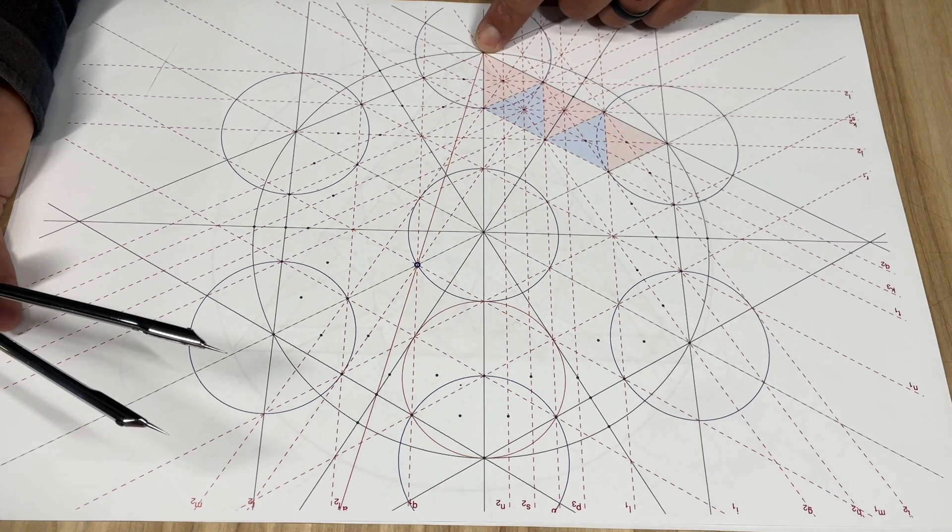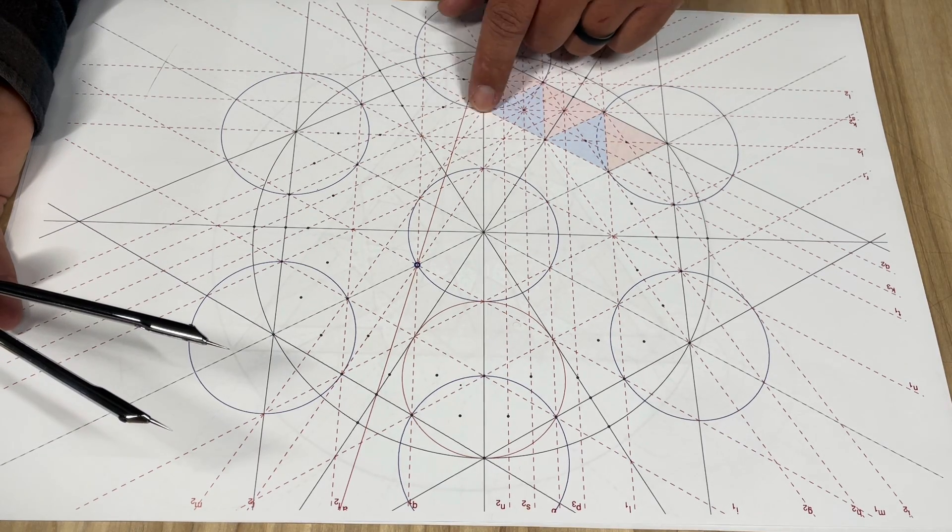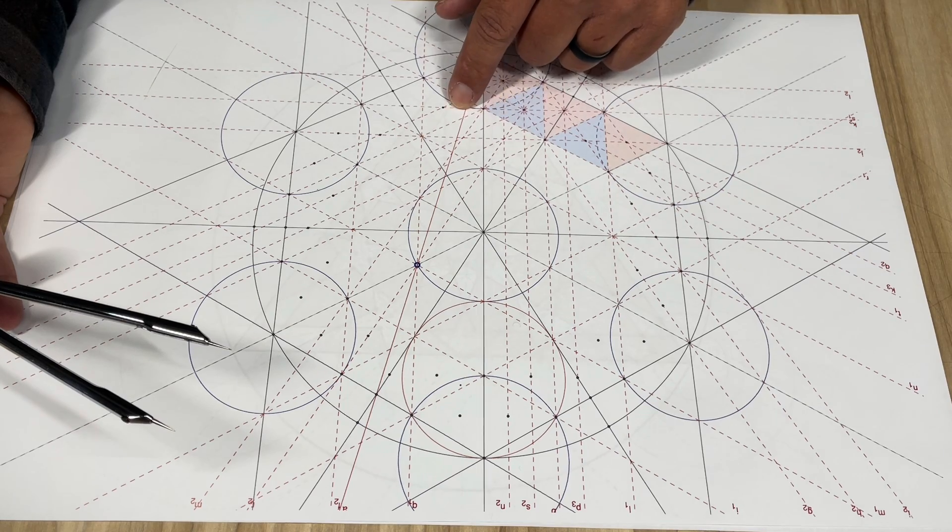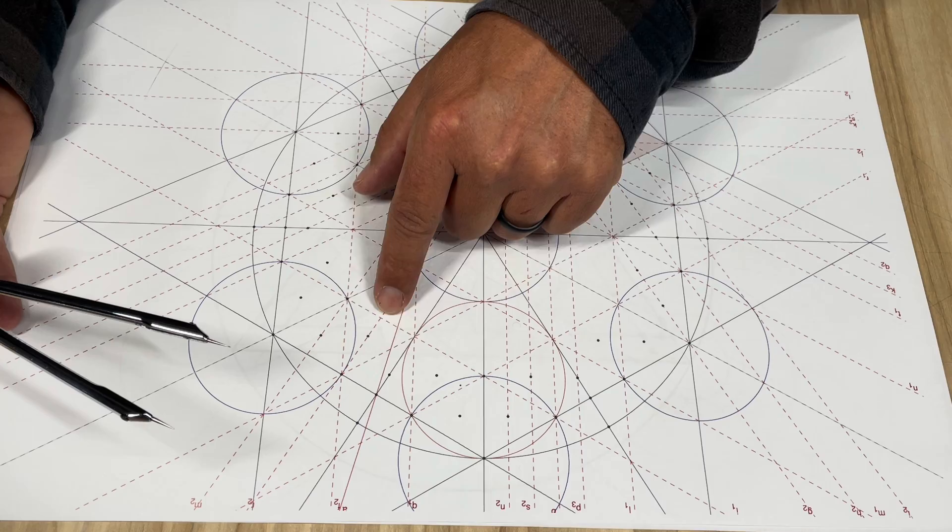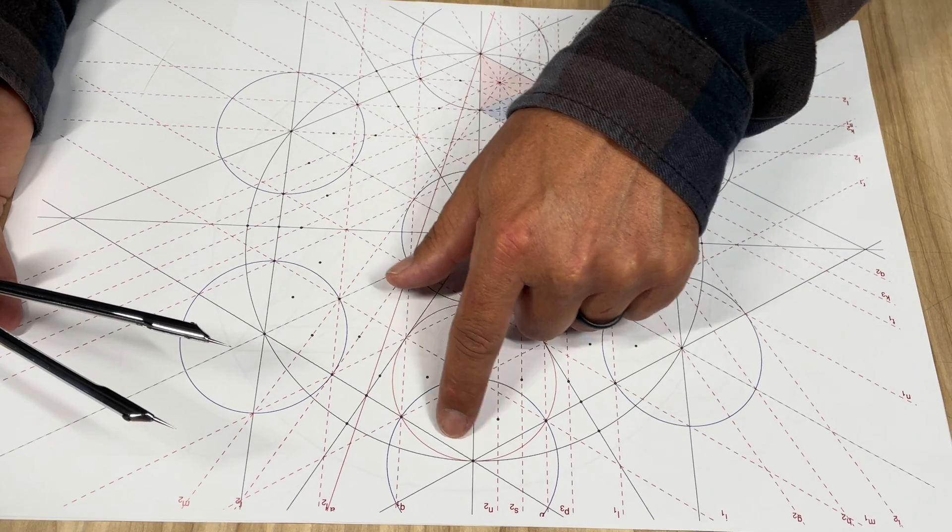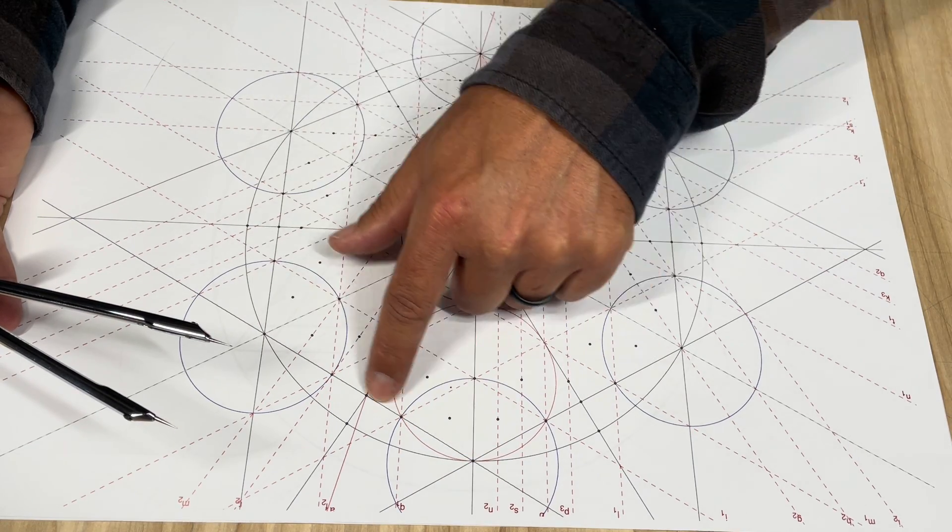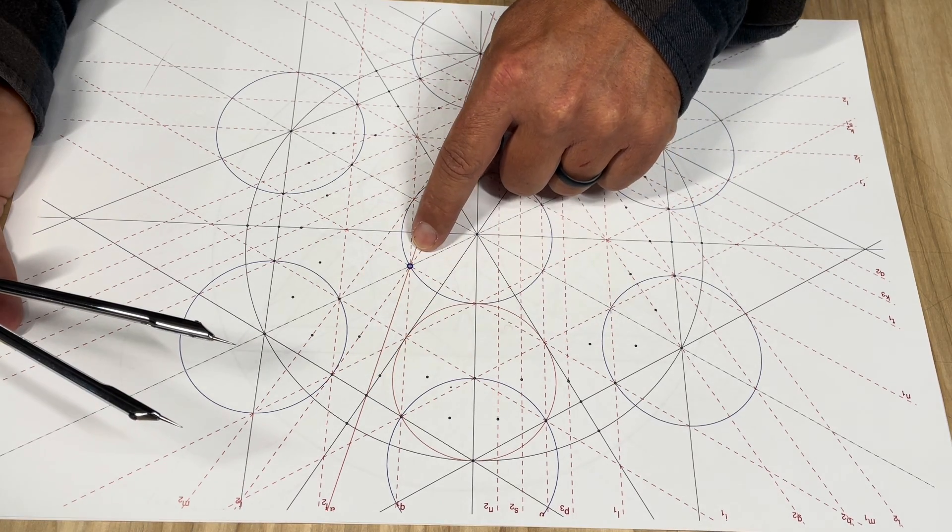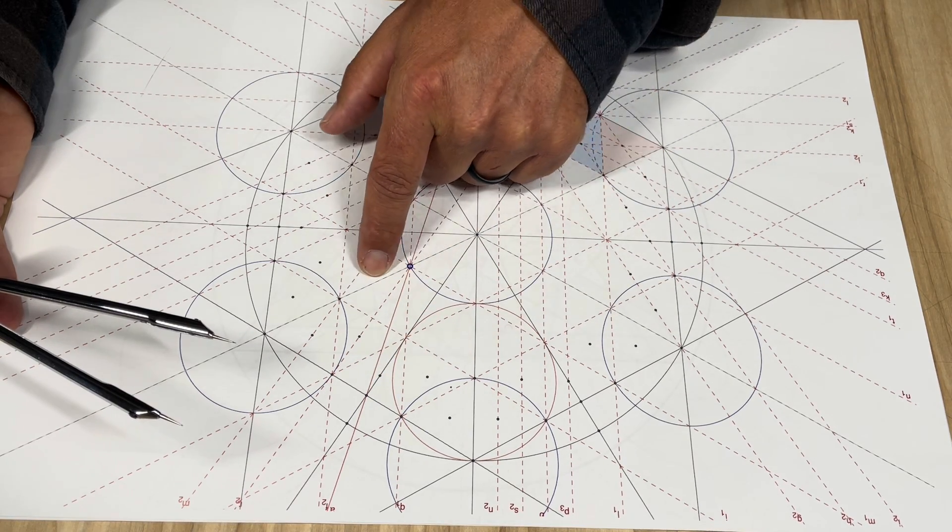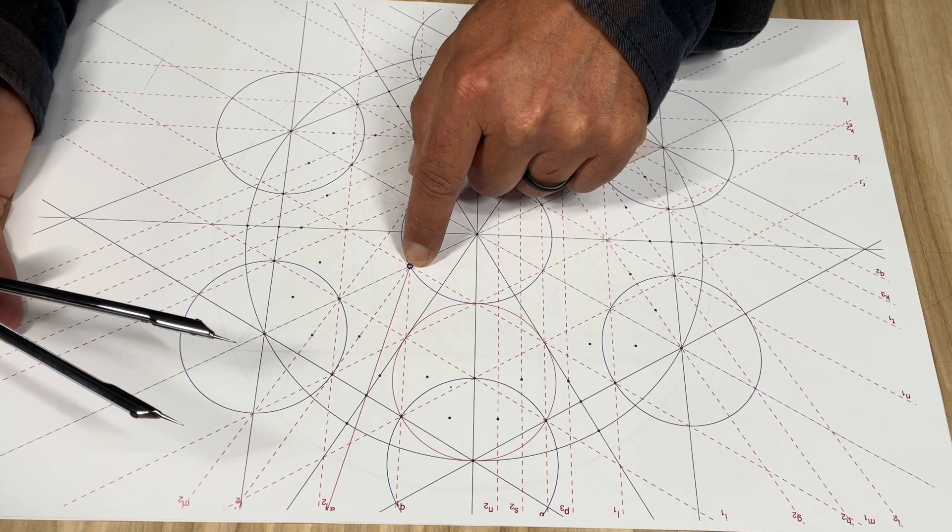And then I figured out the way to get this proportioning circle is coming off the center here, going across to this 12-hole division where that line comes down from the hexagon right there, and where that intersects with this division gives me the proportioning circle.